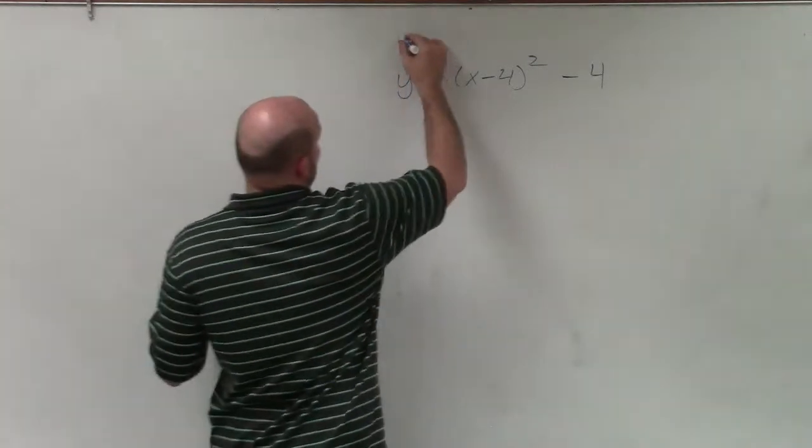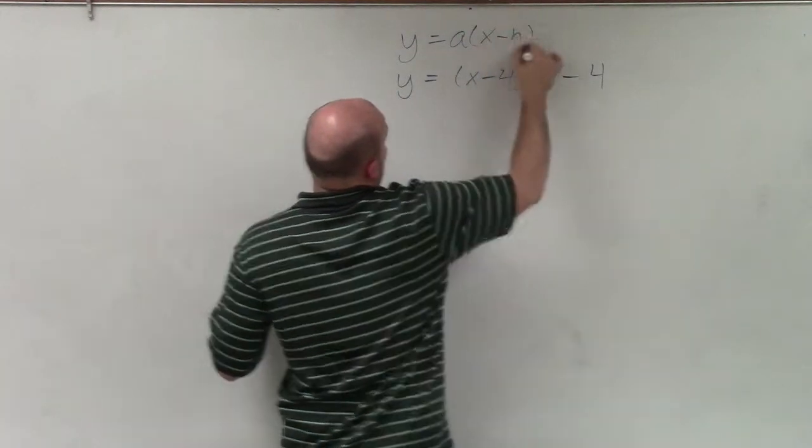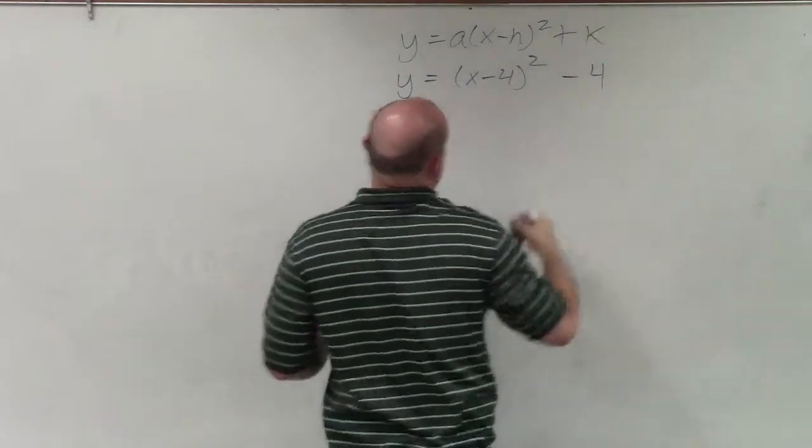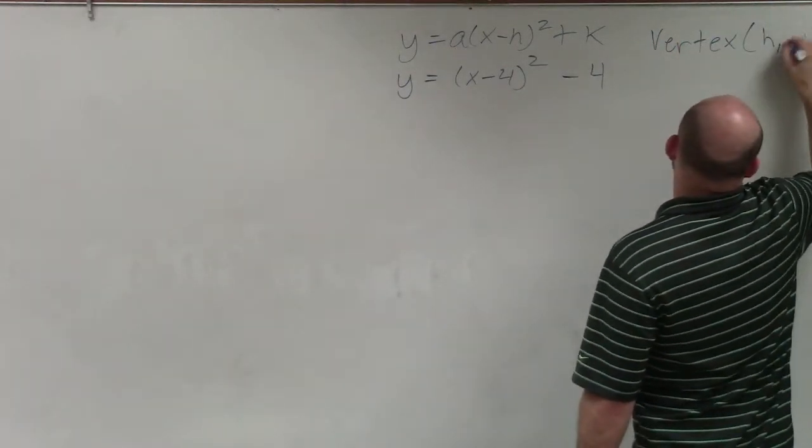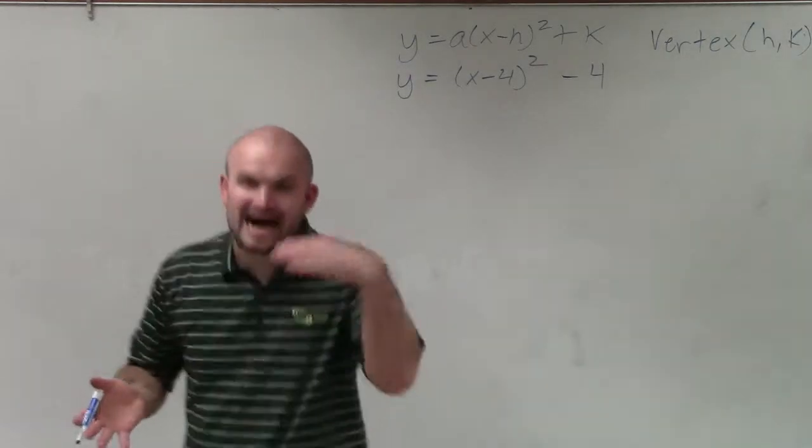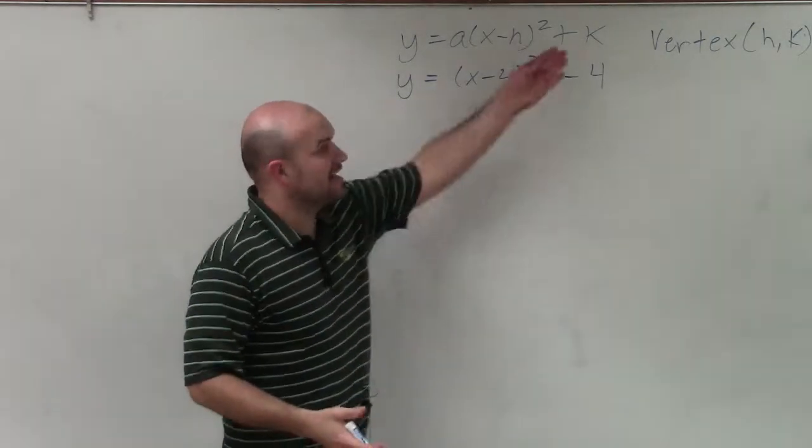Remember that vertex form is y equals a times x minus h squared plus k, where my vertex is h, k. Notice in the formula, it's x minus h and then k.